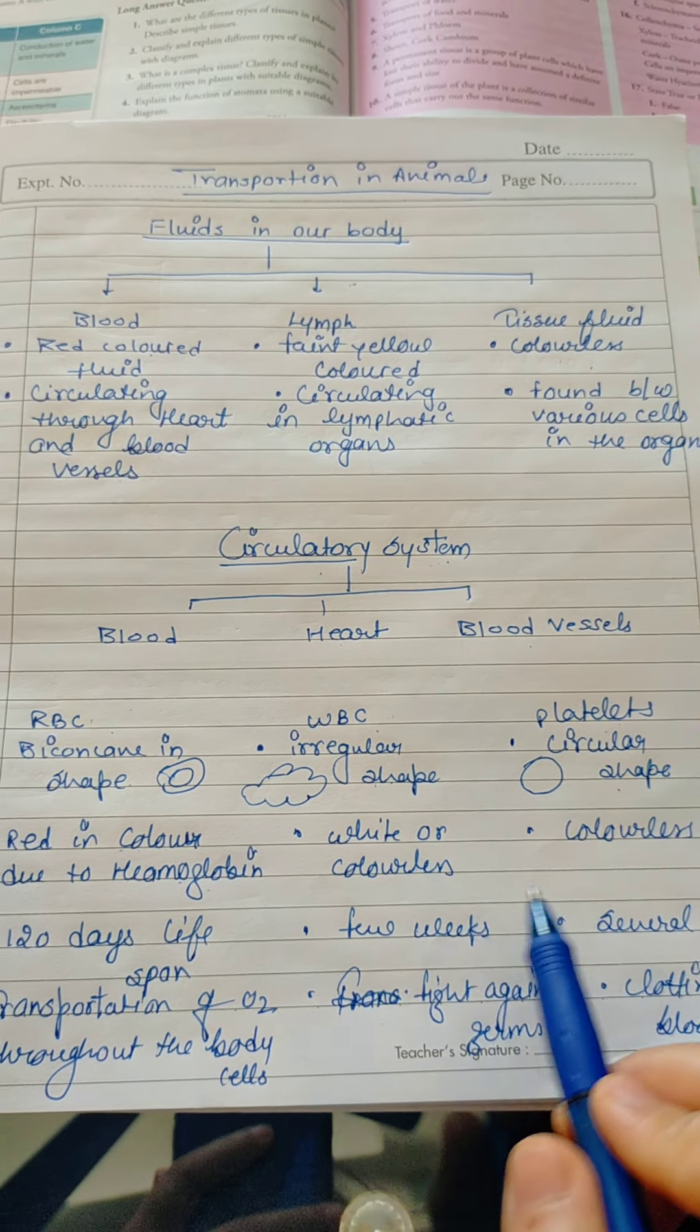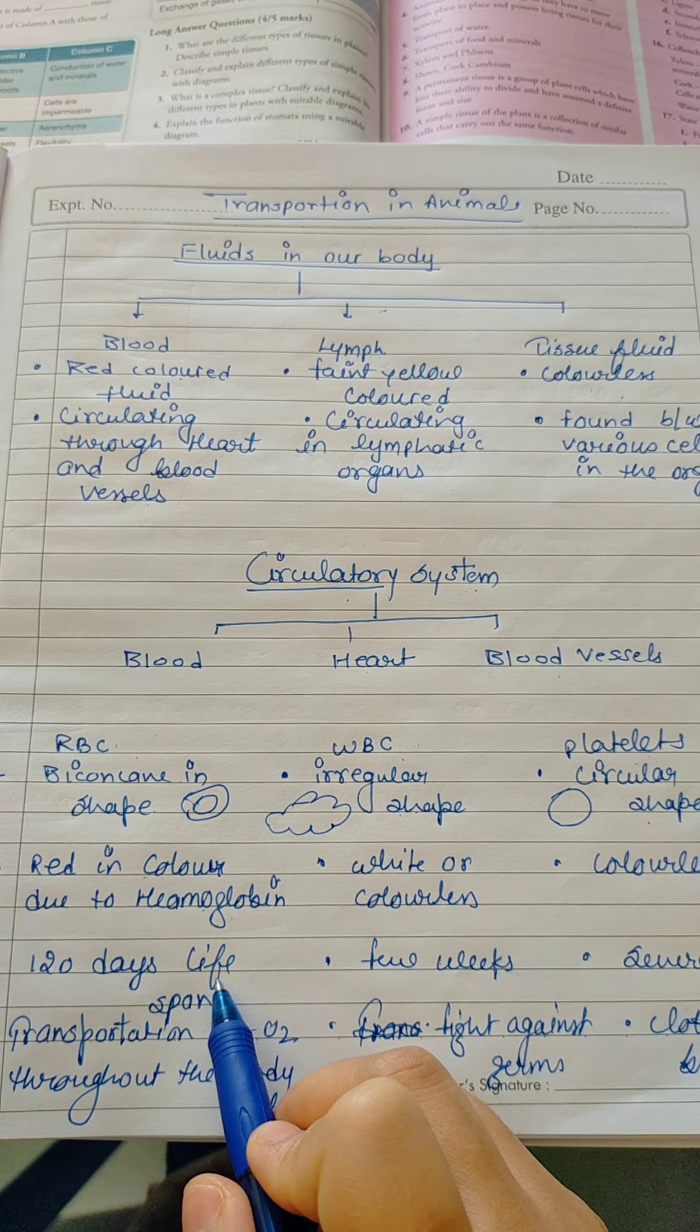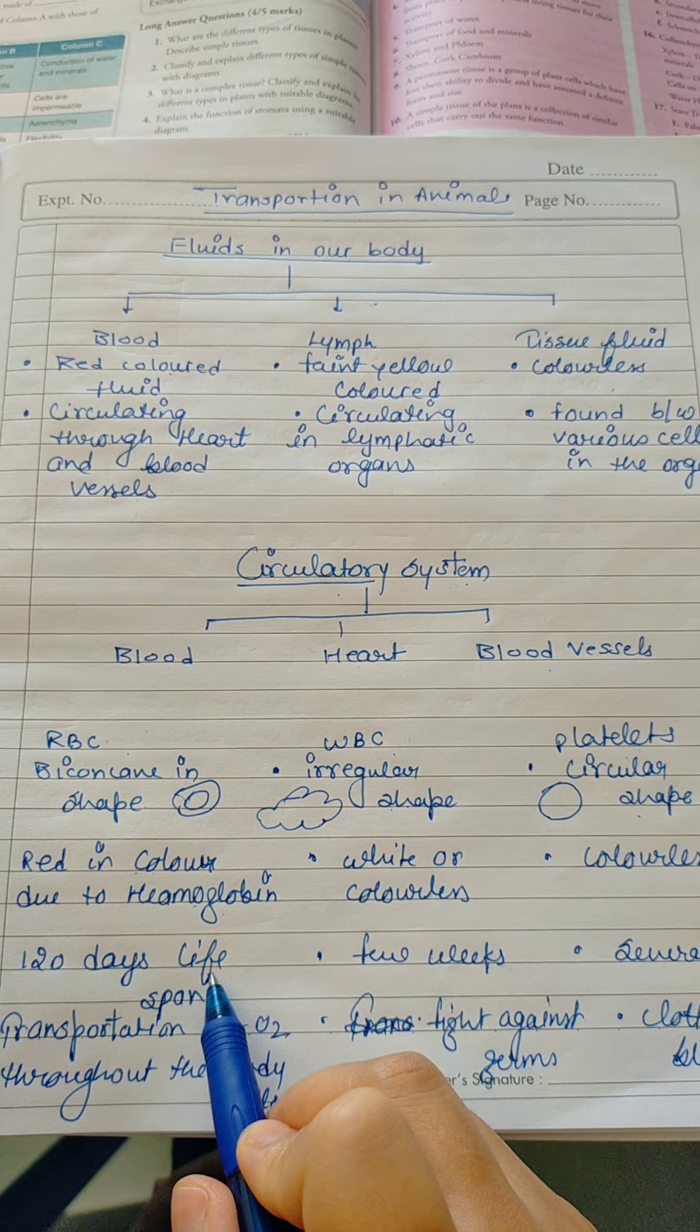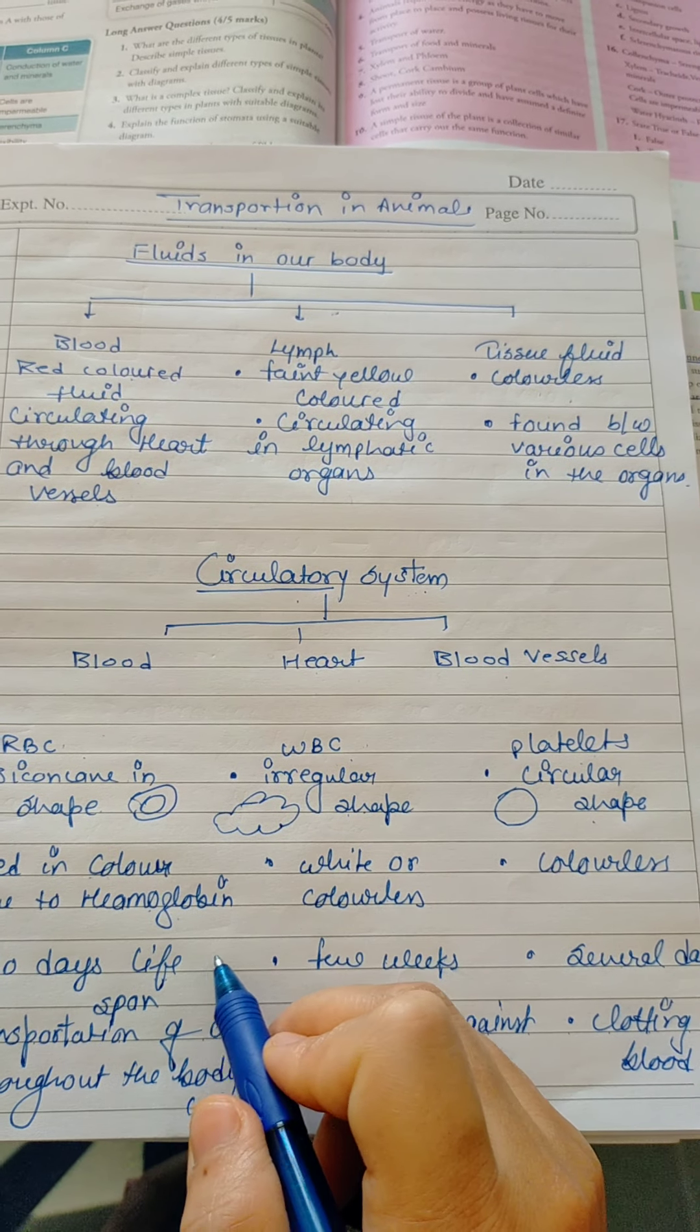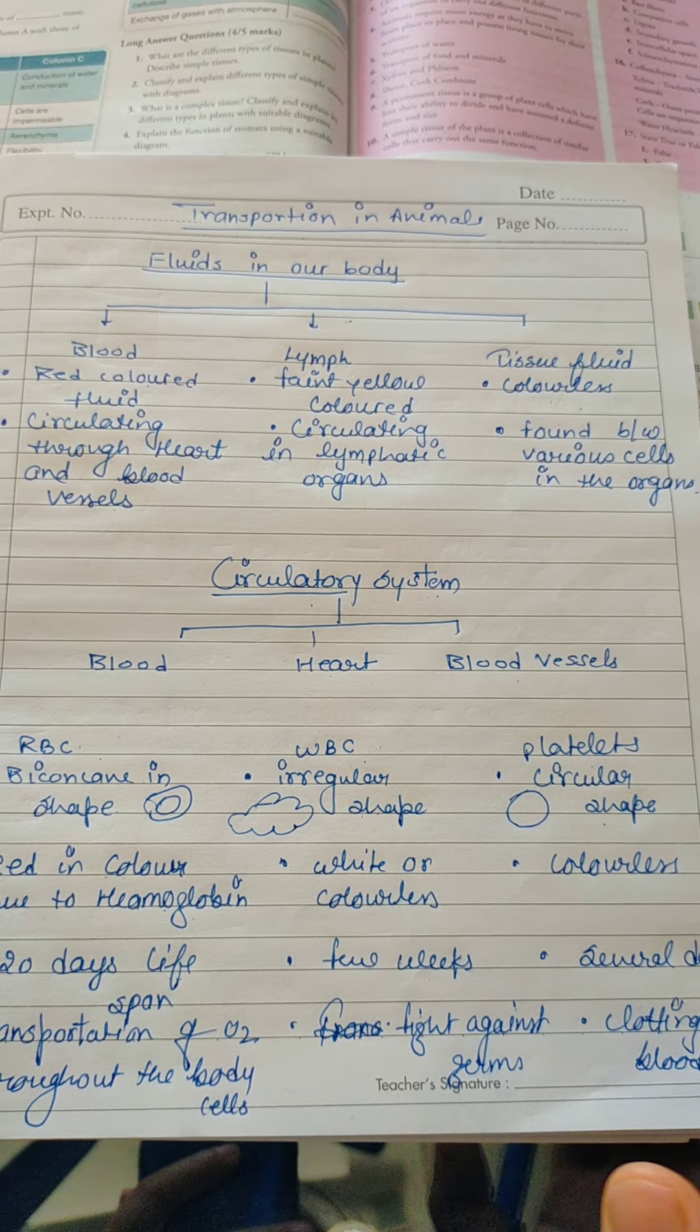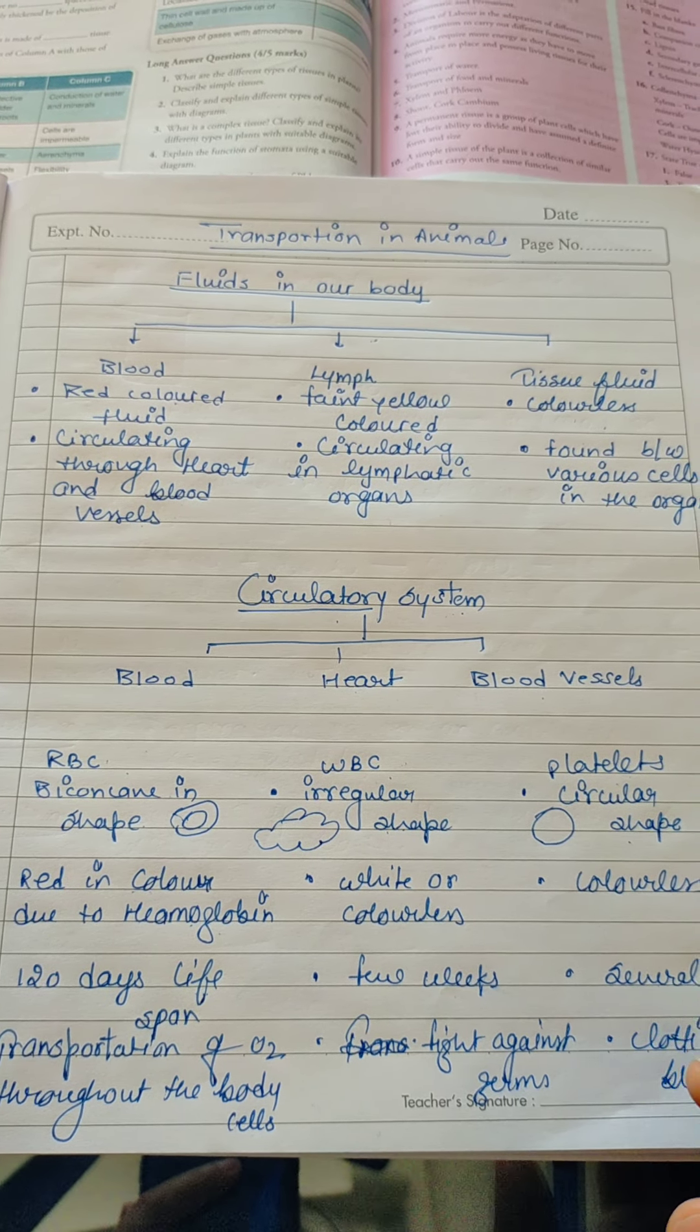And platelets are also colorless. Lifespan, this is 120 days. Lifespan RBCs can survive. It can survive until a few weeks and it can survive until several days. It means that if you have formed your RBC today, it will survive until 120 days and then it will be destroyed in the spleen. That's why the spleen is called graveyard.